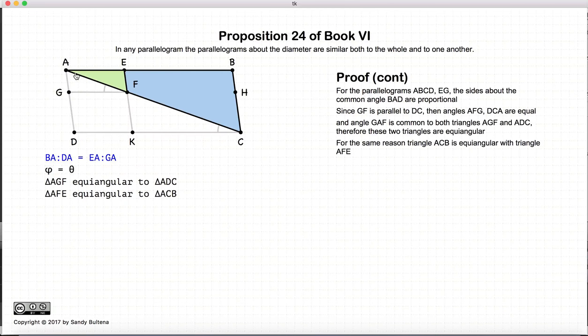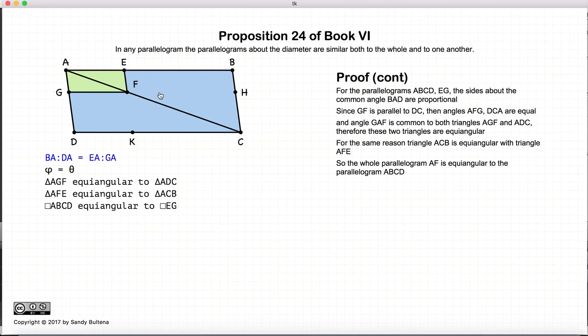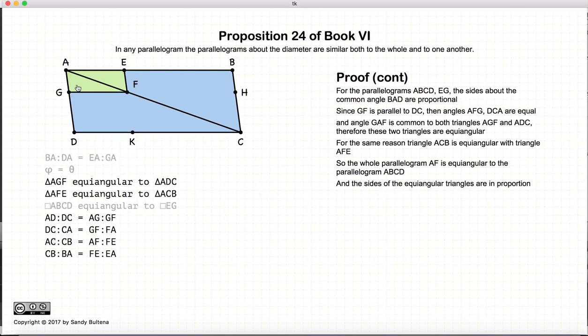So AGF is equal angular to ADC. And similarly, AFE, this little green triangle is equal angular to the blue plus green triangle. So putting this all together, the parallelogram ABCD is equal angular to the parallelogram AEFG. Now, if we have two triangles that are equal angular, so AGF is equal angular to ADC, and likewise AEF is equal angular to ABC, then the sides about the triangles are proportional.